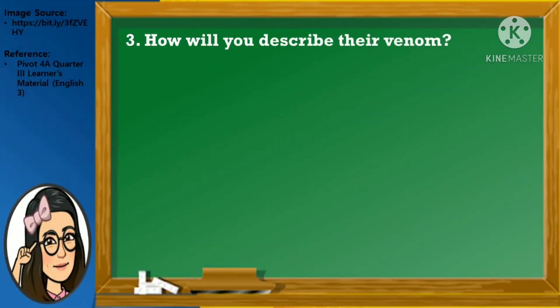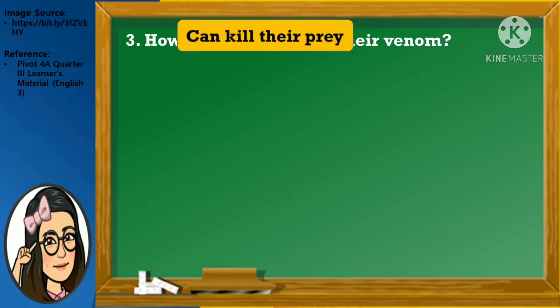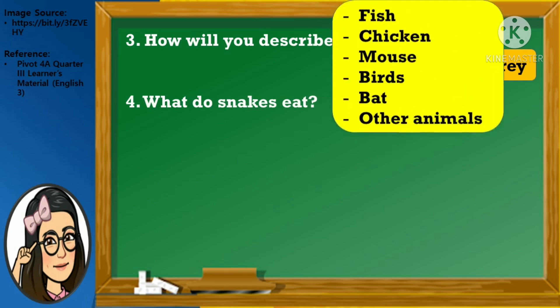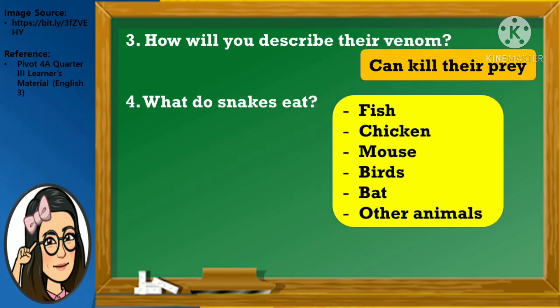Number 3: How will you describe their venom? Very good! Snakes' venom can kill their prey. Number 4: What do snakes eat? Good job! Snakes eat fish, chicken, mouse, birds, bat, and other animals.